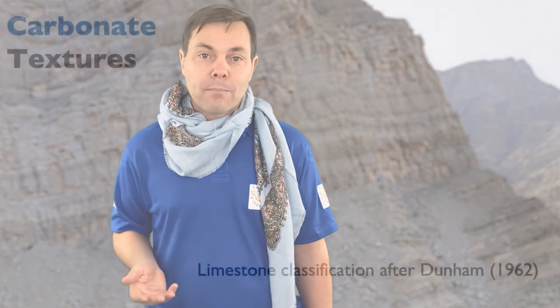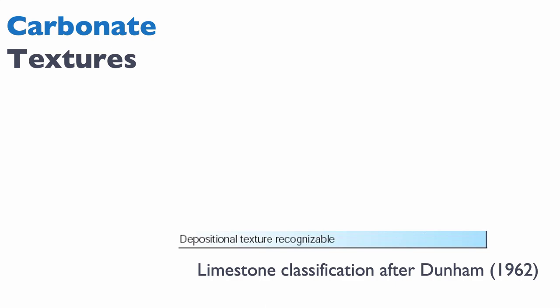Let's build the Dunham classification texture from the ground up, step by step. The first step is to determine whether or not the depositional texture is still recognizable — that's a key concept in Dunham. Most rocks will have experienced some degree of diagenesis, dissolution, or reprecipitation. You need to strip that out and go back to how the rock was deposited. This is both a difficulty and a power of the Dunham classification, because it gives us information about the depositional environment.